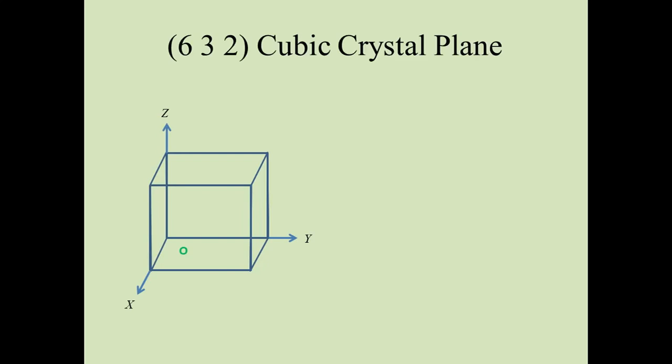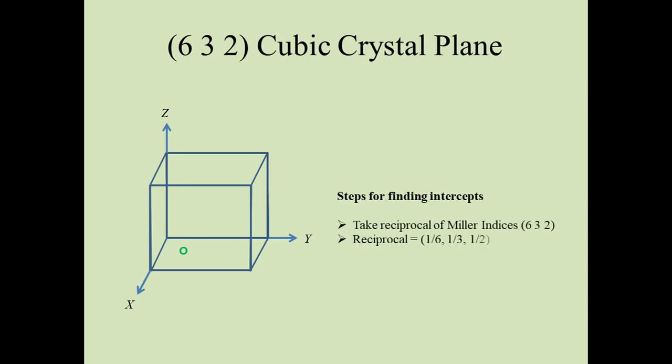Our first case is the (632) cubic star plane. We have to draw the cubic star plane with the Miller indices 632. Our first step will be to find the intercepts: take the reciprocal of the Miller indices and we will get 1/6, 1/3, 1/2.